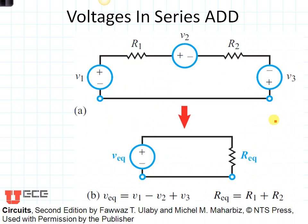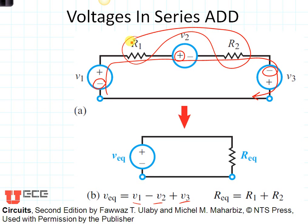Voltages in series add. Here we have three voltages in a circuit. The way they're going to add is we'll just go in this direction. Here is minus V1 plus V2 minus V3. And so right here the voltage equivalent is V1 minus V2 plus V3. The equivalent resistance is found by summing up the two resistors that are in series. So the bottom circuit is an equivalent of a top circuit.